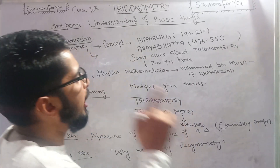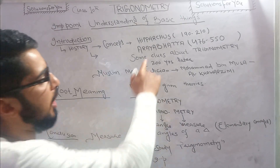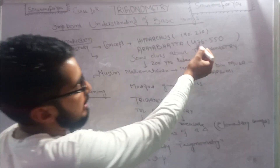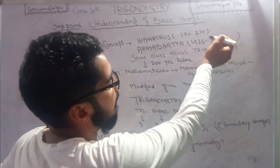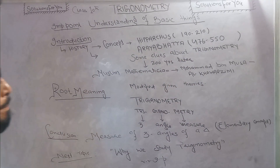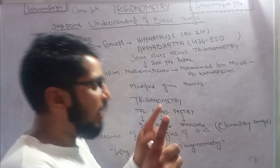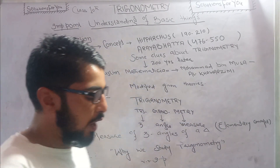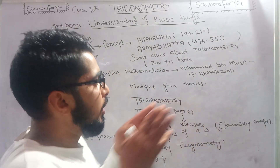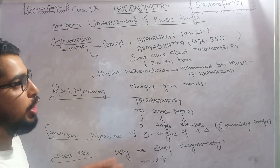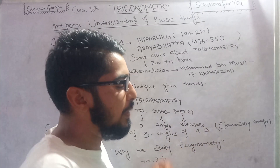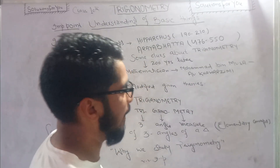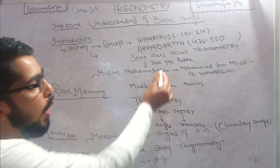Another theory relates to Aryabhata, one of the most famous mathematicians in the mathematical field. His period was from 476 to 550 CE. During this period, he did not give 100% of the concept of trigonometry, but his theories certainly contain clues to trigonometry.